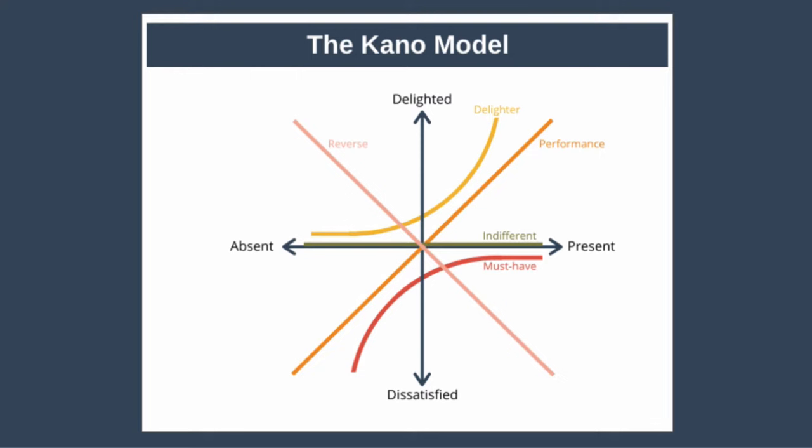The five categories are: must-have features, performance features, delight or delighter features, indifferent features, and reverse features. Let's dig a little deeper into each of these types of features.